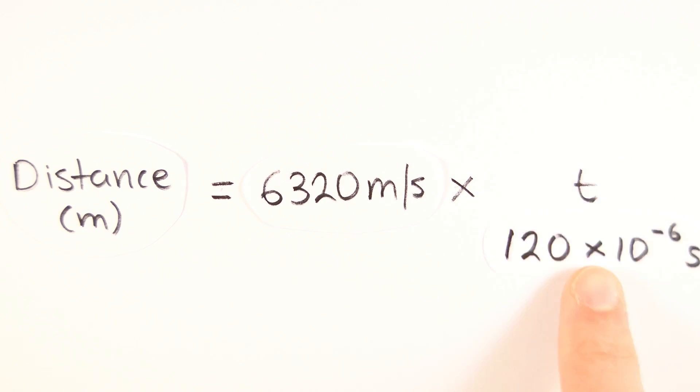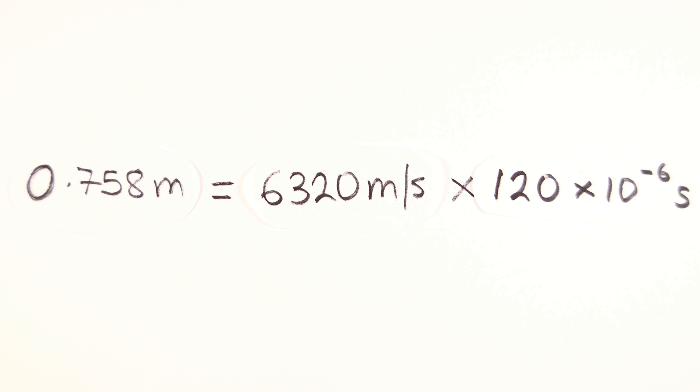120 microseconds is 120 times 10 to the minus 6 seconds. Now all we need to do is substitute this value along with the speed of sound in aluminum into the equation to find the distance of 0.758 meters.